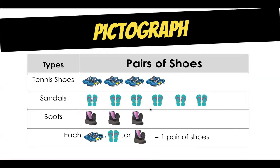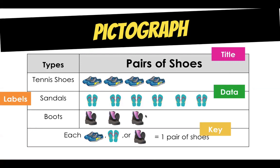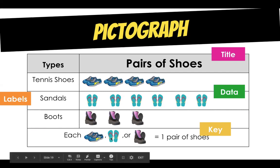Some pictographs use all different pictures. You can see they used tennis shoes for tennis shoes, sandals for sandals, and boots for boots. It still has all the same things — the title, the labels, the data. What has changed is the key. The key now shows us that a tennis shoe, a sandal, or a pair of boots each equals one pair of shoes.